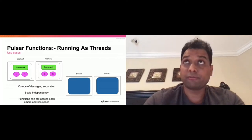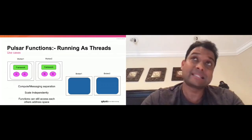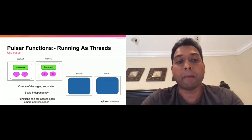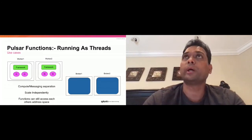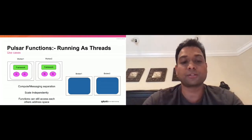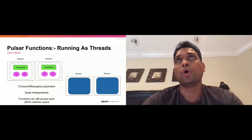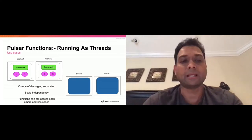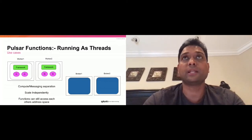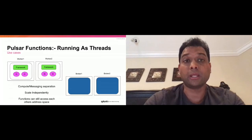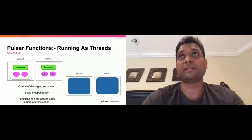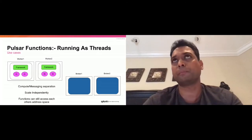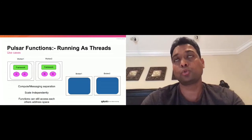Because functions are still running as threads, they can still access the framework's address space and interfere with each other more directly. Running as threads — even when processing is separate from brokers — still has the same noisy neighbor issues you occasionally see in Flink and Spark. Running as threads gives you flexibility in terms of reduced JVM cost, but you trade that off with noisy neighbors. It really depends on what use case you have and what's acceptable.